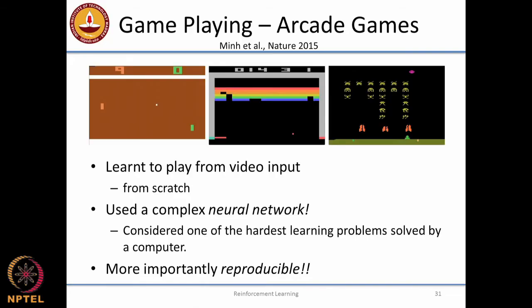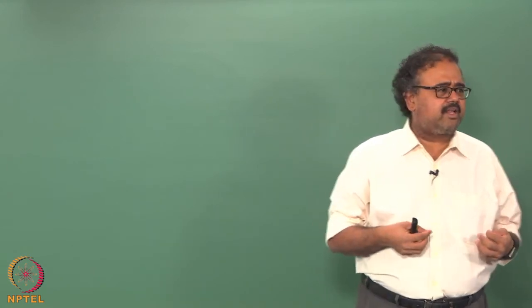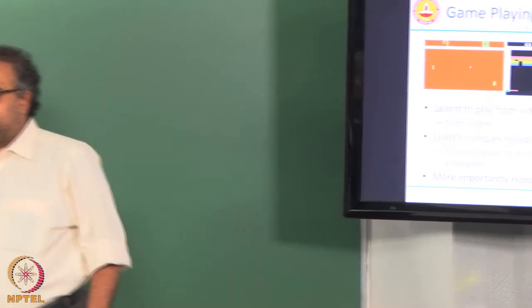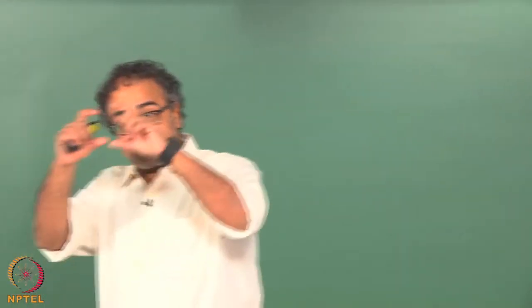What they did involves Atari games — Pac-Man, Pong, Breakout, Space Invaders. There was a team at the University of Alberta that built what they called the ALE — the Arcade Learning Environment — which allowed computers to play Atari games. What the DeepMind team came up with is a reinforcement learning agent that learned to play these games from scratch, just by looking at the screen — only the raw pixels as input — using a very complex deep neural network.